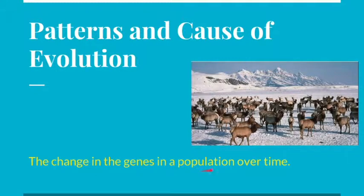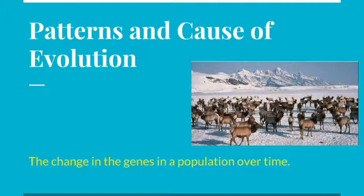When I say population, I'm talking about a group of organisms who are all of one species, who are living together in an area. This picture here is of a bunch of elk living together — it is a population of elk. You can define a population however you want. For humans, you could say the entire population of the earth, or you could talk about the population of students at Franklin High School. How you limit how big a population is is really up to you.